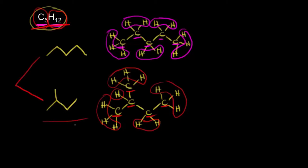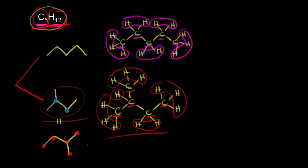To draw another structural isomer, some students might say we could start with four carbons in our chain again and this time show a branch off of a different carbon. But actually, these are just two different ways to represent the same molecule. If you analyze that second structure, the connections are the same: we have a CH bonded to a CH3, bonded to a CH3, and bonded to a CH2, and the CH2 is bonded to a CH3 — that's the same structure as what we drew before. So it looks like a different drawing, but it represents the same molecule.